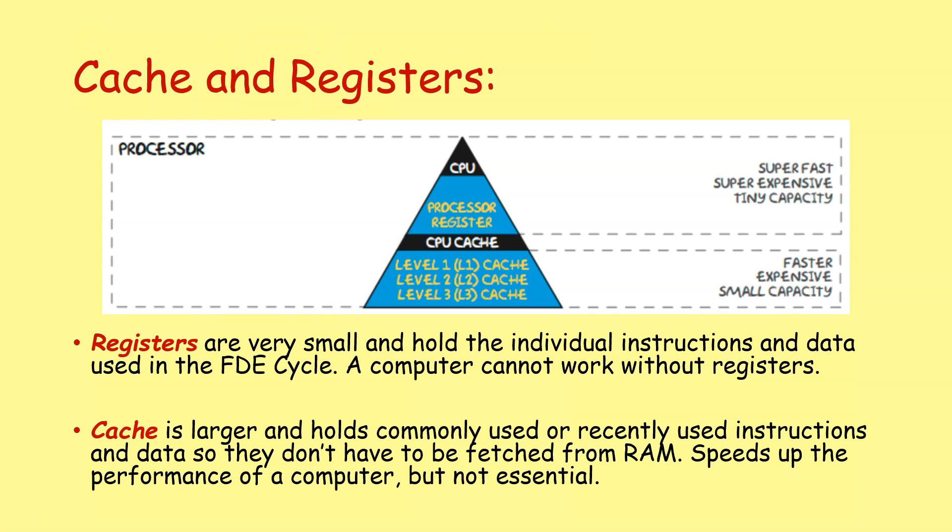So cache and registers are a little bit complicated. They're a little bit difficult to understand. They can seem very similar. The idea is that registers are extremely small and they hold individual instructions and data used in the fetch decode execute cycle. Computers just can't work without registers. You must have them on the CPU in order for the computer to do this fetch decode execute cycle and do its job. But cache is larger. It holds megabytes of data, not just individual data and instructions. It holds commonly used or recently used instructions and data so they don't have to be continuously fetched from RAM, which is slower. Having cache speeds up the performance of a computer, but is not essential. And indeed, some older processors would have no cache memory, but that meant they would operate very, very slowly. So having a bit of cache really speeds up your processor. And more expensive processors like top of the line Intel or AMD Ryzen chips will have a lot more cache memory than the cheaper chips. And that's one of the reasons why they're faster, but also more expensive.